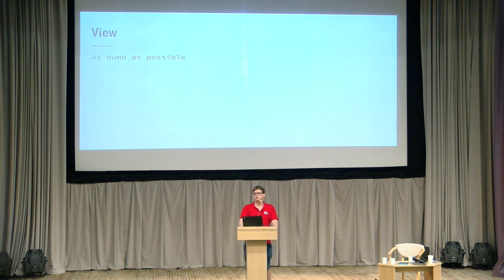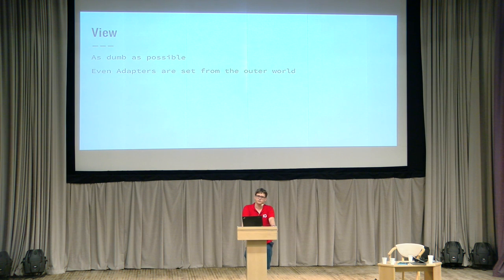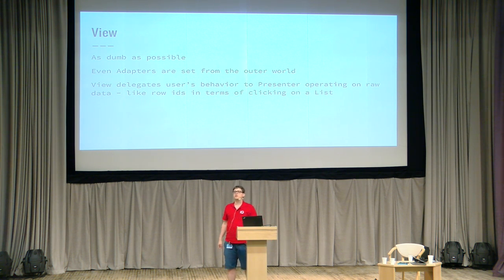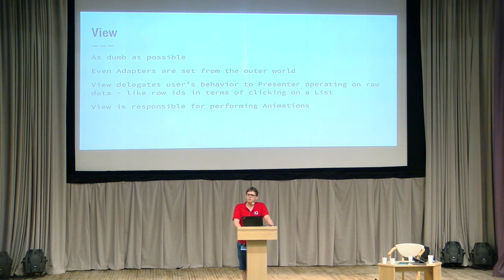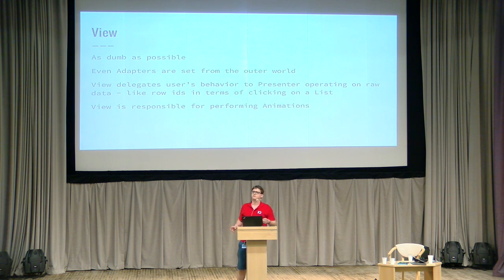View — we probably all agree it should be as dumb as possible. It should know nothing. In our implementation, even adapters are set from presenters. View methods are basically one-liners that delegate data received and processed by the presenter beforehand, and just put it on a TextView or whatever. View delegates user behavior to the presenter — whenever you click an item, select from a spinner, do whatever — everything is delegated to the presenter. The listeners we have on our views are one-liners that just invoke the corresponding method on the presenter. Animations on Android can be a little tricky, but in our implementation views are performing animations — that's their responsibility.